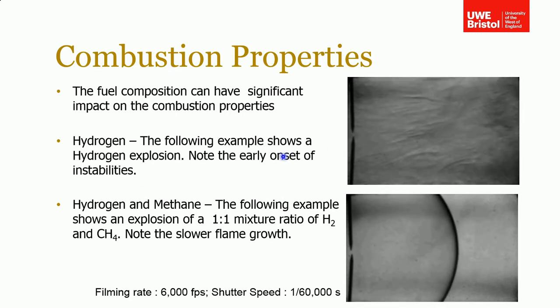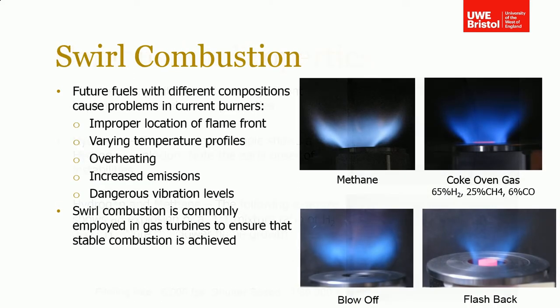What impact does that have for a gas turbine designer? Quite a lot, because the future fuels we're looking at — some from anaerobic digestion and different sources — can have quite large quantities of hydrogen in them. Changing the hydrogen composition in the fuel can change the flame speed dramatically. If you've designed your combustor to run on just methane and then suddenly you've doubled the flame speed, you can have improper location of the flame front, different temperature profiles, overheating, and increased vibration levels.